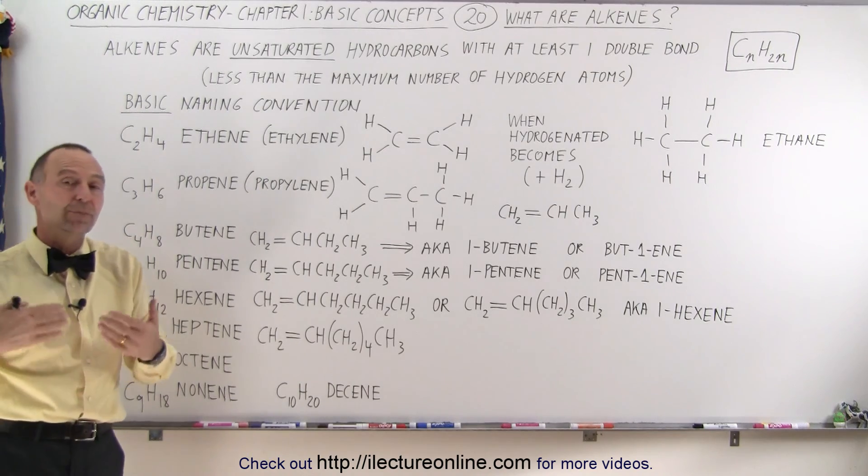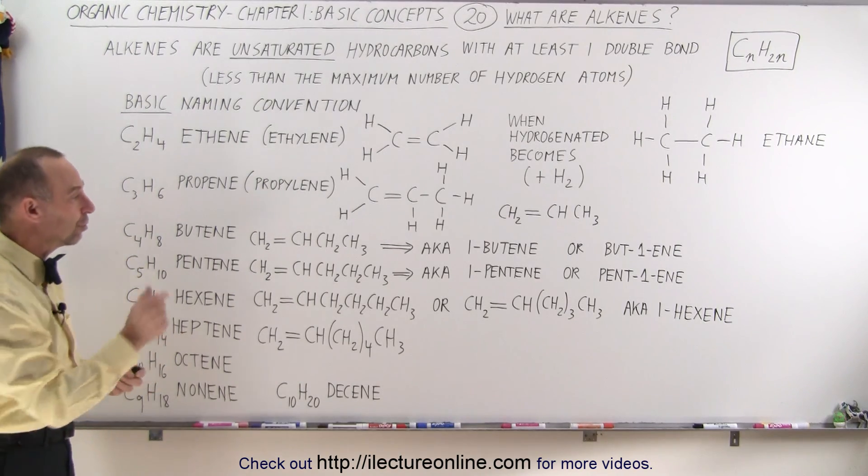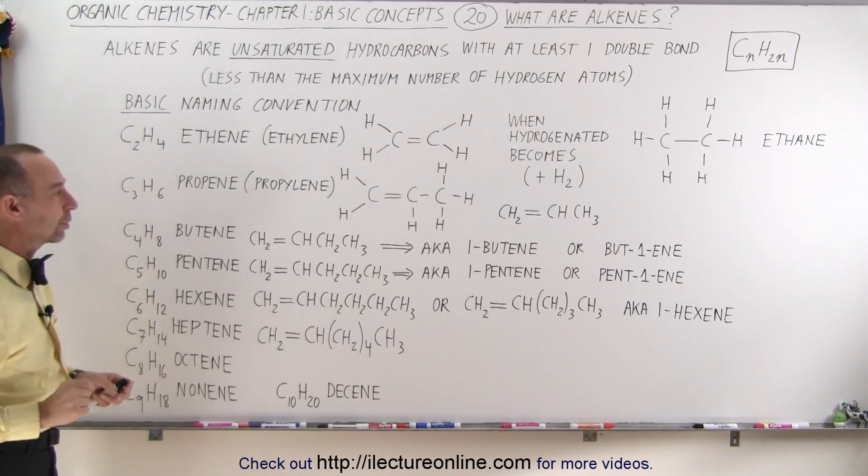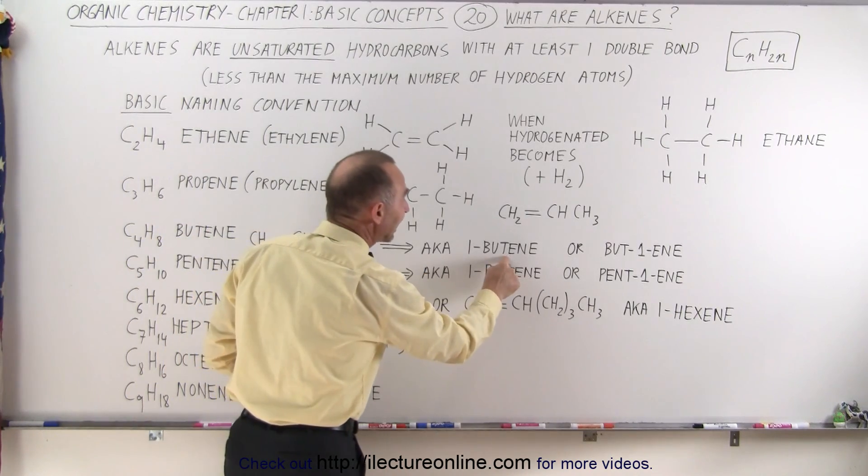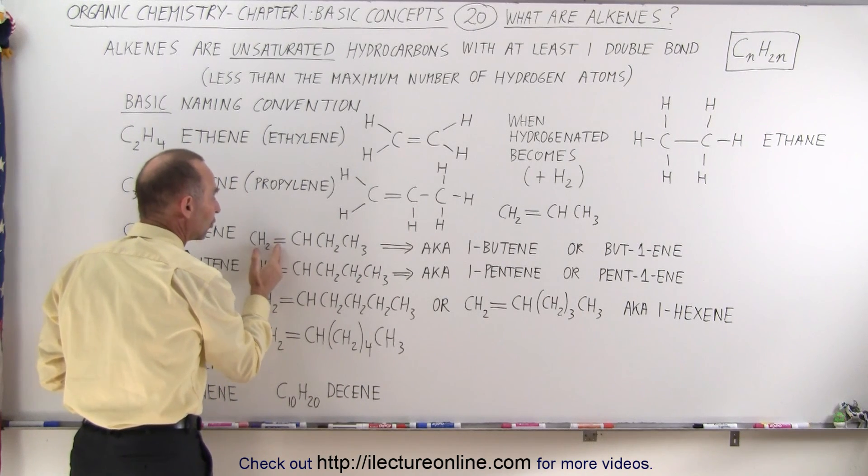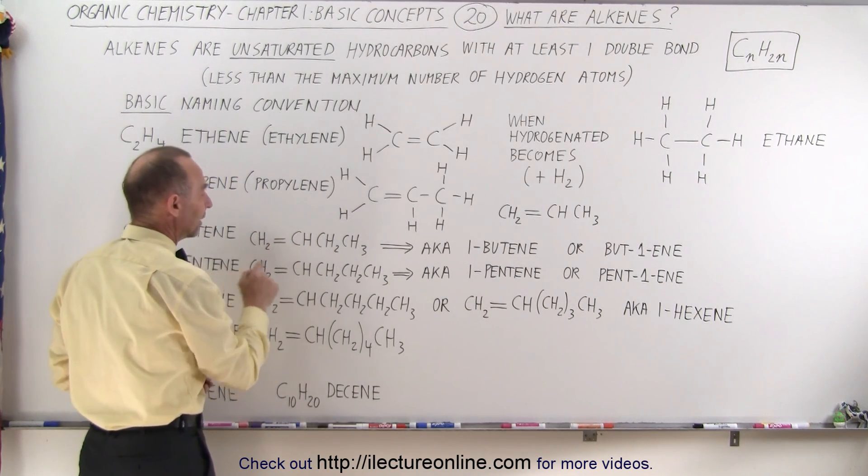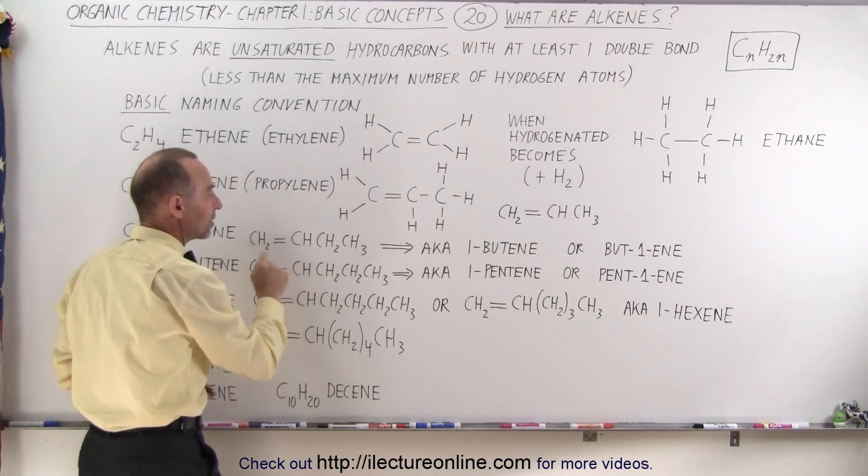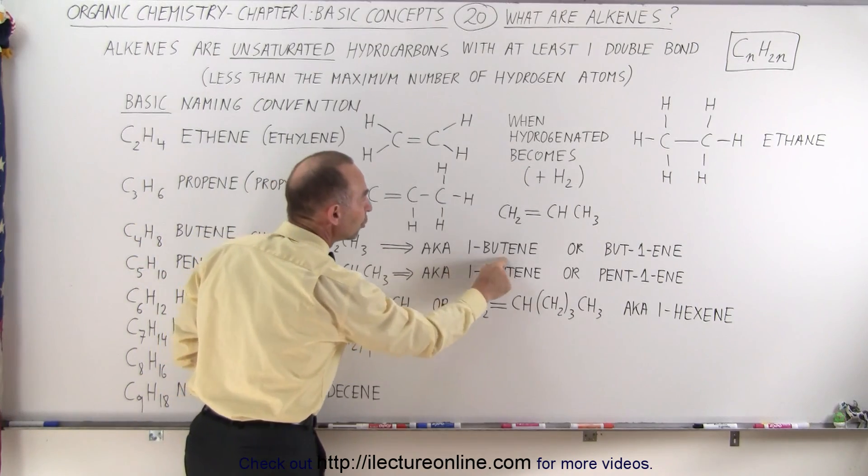And then there's some special ways of naming the molecules, depending upon where the double bond occurs. For example, 1-butene indicates, the one here indicates, that the double bond occurs on the first bond, not the second bond. If the double bond is here instead of here, then we would call it 2-butene.